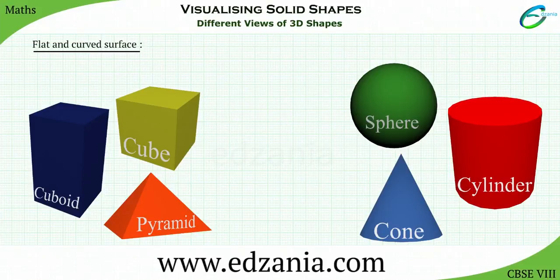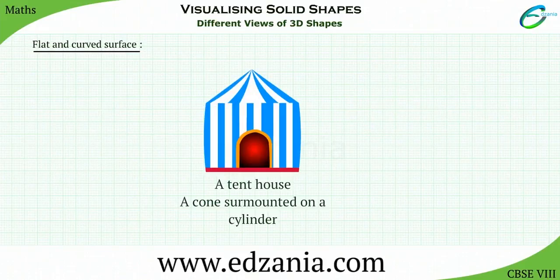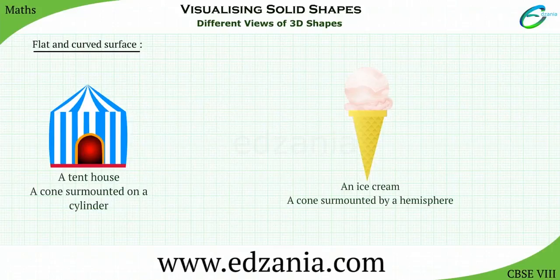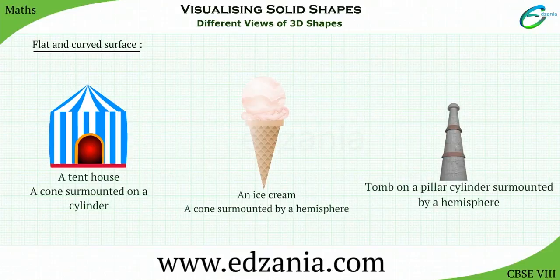Let us look into some of the objects which are surmounted by another 3D object. A tent house — a cone surmounted on a cylinder. An ice cream — a cone surmounted by a hemisphere. A tomb on a pillar — a cylinder surmounted by a hemisphere.